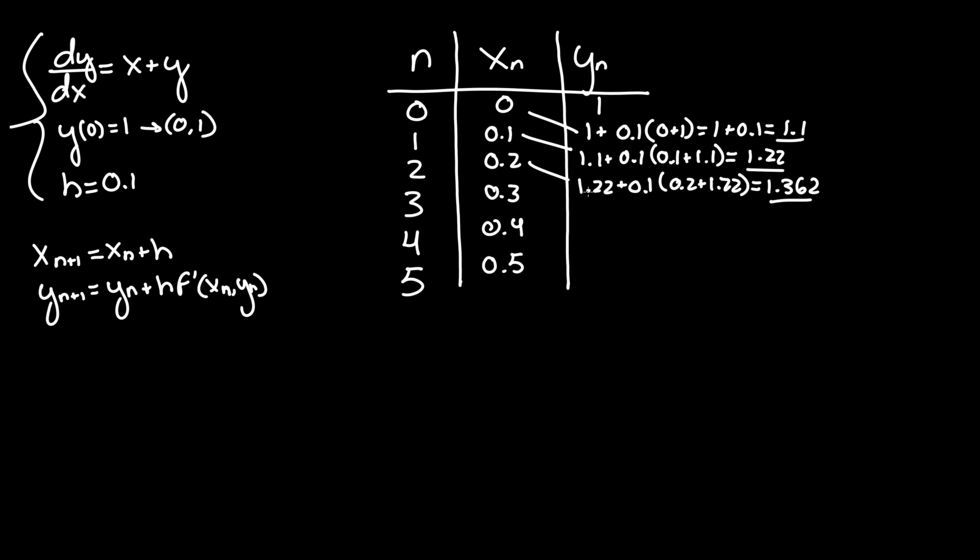We only have to do this two more times. So y_4 = y_3 + h·(x_3 + y_3) = 1.362 + 0.1(0.3 + 1.362) = 1.5282.